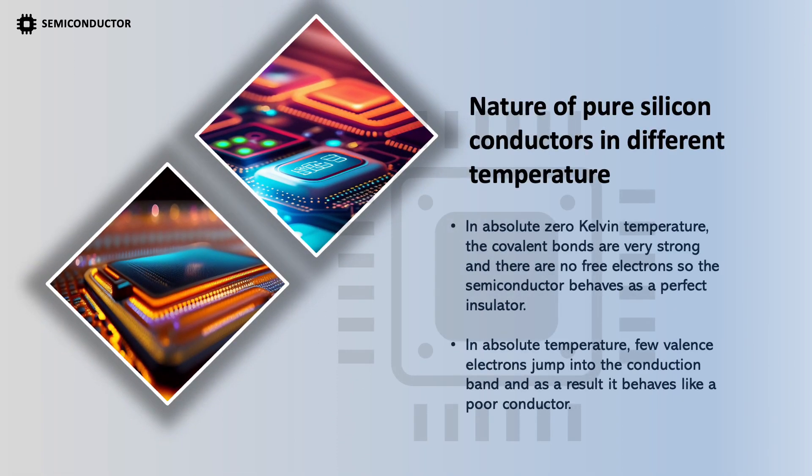Nature of pure silicon at different temperatures: At absolute zero Kelvin, the covalent bonds are very strong and there are no free electrons, so the semiconductor behaves as a perfect insulator. At higher temperatures, a few valence electrons jump into the conduction band, and as a result it behaves like a poor conductor.